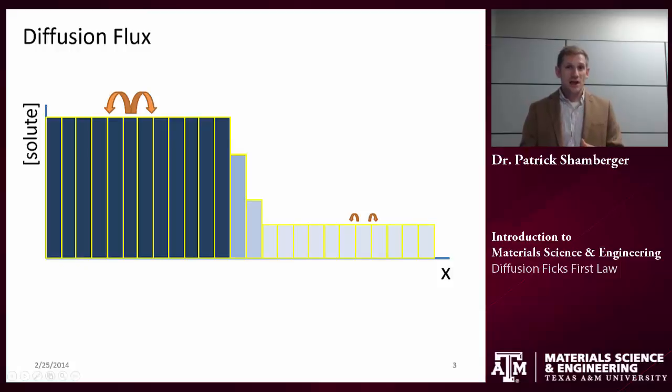Now remember, on an atomic scale, all those atoms are moving around randomly. They're equally likely to move to the right or to the left. But what is changing our compositional gradient here is the fact that if I do have a gradient, I'm more likely to move downhill than I am to move uphill.